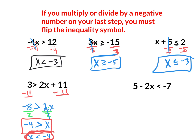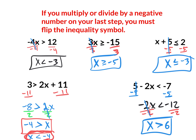Last question: solve 5 + negative 2x < something. Subtract 5 first — what you do to one side you do to the other. You have negative 2x < -12. Now divide by negative 2 on both sides — this is the last step and we are dividing by a negative, so flip the inequality. A negative divided by a negative is a positive. x > 6.